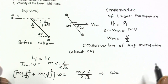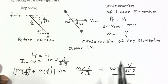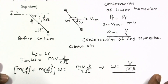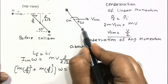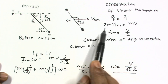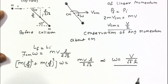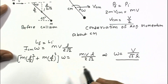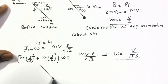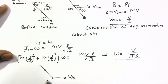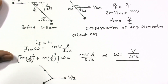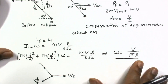So omega = V/(√2·L) is the angular velocity just after the collision, and VCM = V/2 is the velocity of the center of mass. To find the velocity of the lower right point, the velocity of that point is the resultant of the velocity due to linear motion of the rod and due to angular motion. Due to rotational motion, this point has velocity omega·(L/2) perpendicular to the rod.